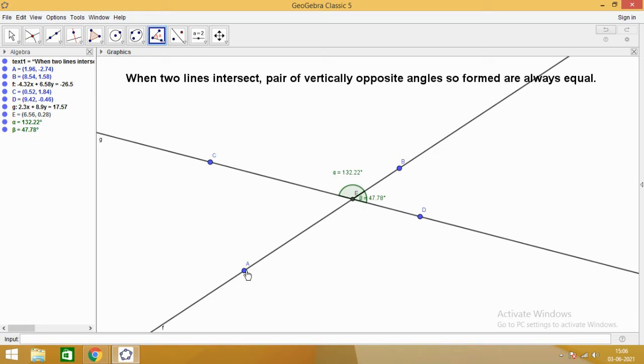Let us see what is the measurement of angle DEA. So here it is angle AED or DEA. Again, we see that, you just observe what is the measurement. So let me bring it a little down so that you can read. It is 132.22 degrees. Interesting observation is coming up.